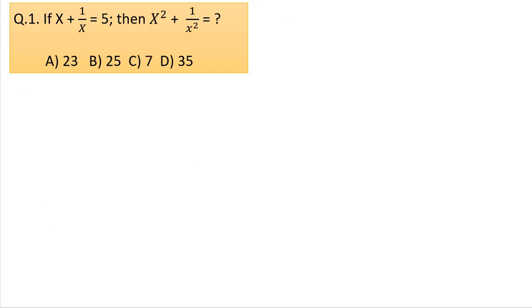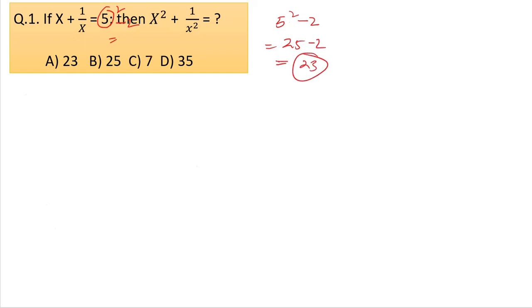We're going to say 5 squared. So we're going to say 5 squared minus 2 equals 23. We go 5 minus 2 equals 2 — twenty three.